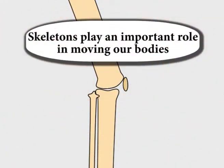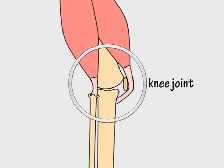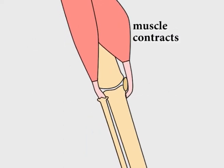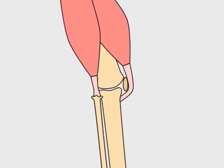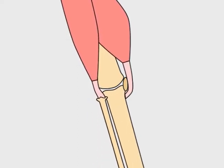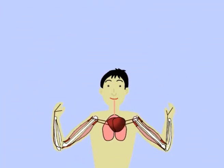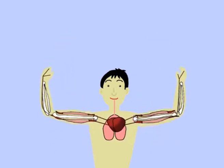Skeletons play an important role in moving our bodies. Muscles are attached to the bones. When a muscle contracts, its length shortens and it makes a bone move. Muscles act in pairs — one muscle actively contracts, becoming shorter, and the other passively relaxes, becoming longer. This contraction and relaxation of muscles is what causes our limbs to move.